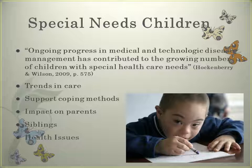Family-centered care takes into consideration that the family is the one constant in the child's life. If it does not function well, it will affect how the rest of the child's life functions. Family-health care provider communication is often difficult because the provider might have to disclose serious acute or chronic illnesses, but it is vital and must be forthcoming. Shared decision making means the child, family, and health care providers all need to be involved in decisions regarding the child's care.